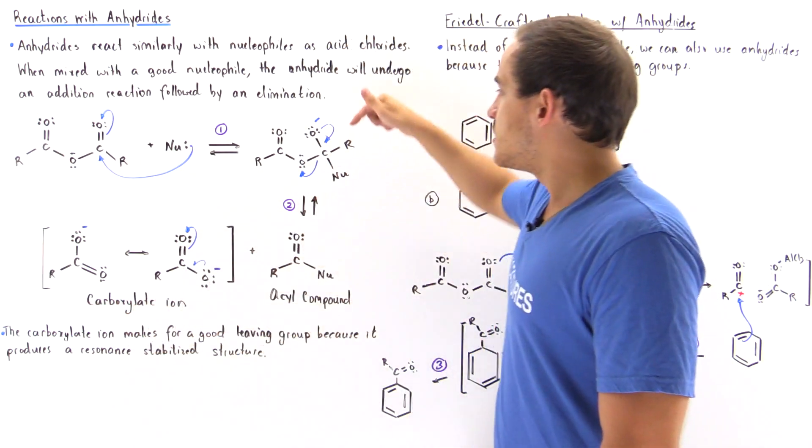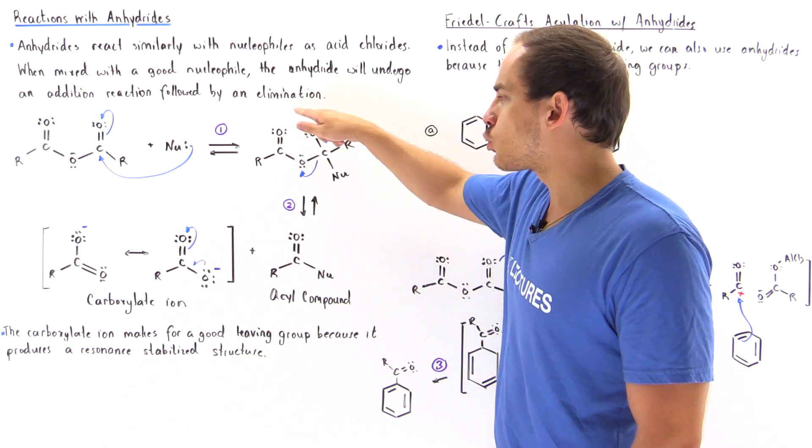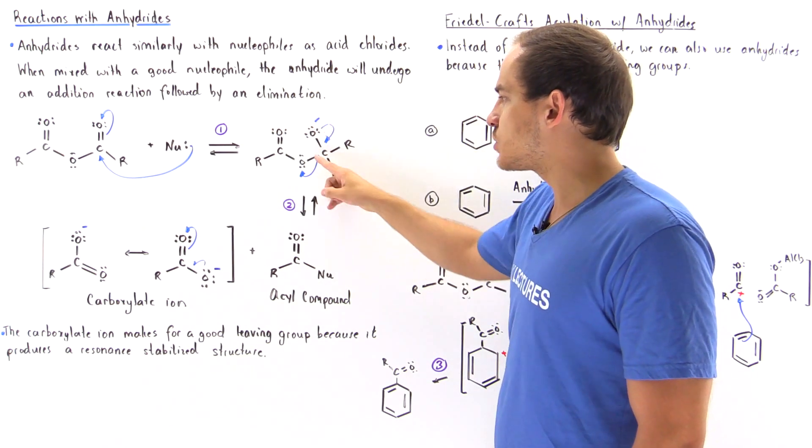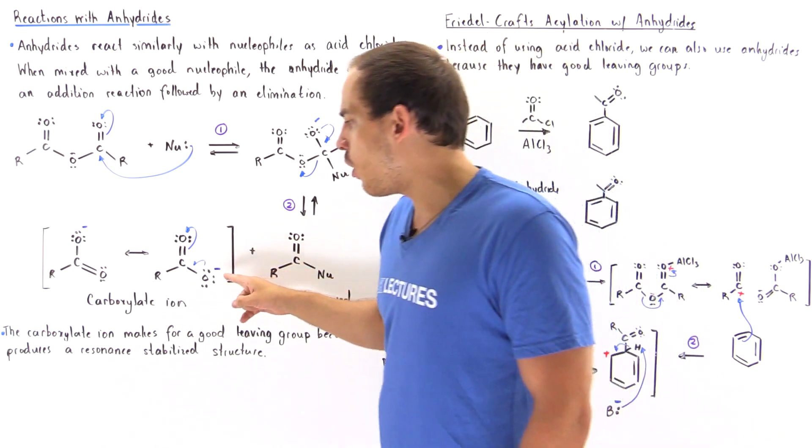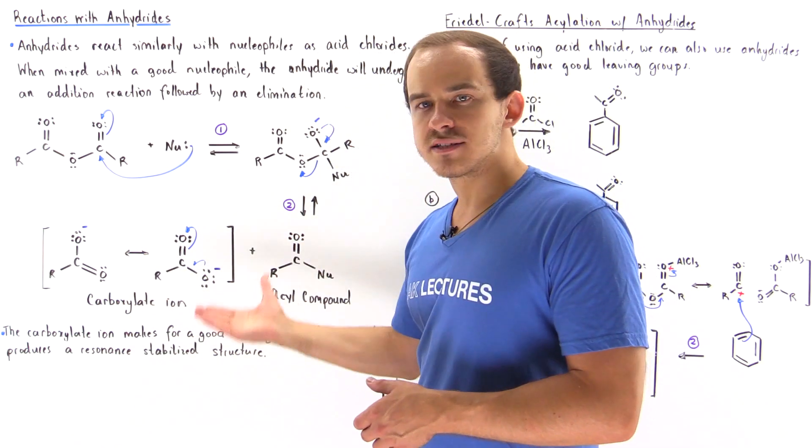in our elimination step, the pi bond is reformed and this good leaving group is kicked off. So this bond breaks off and we form a resonance stabilized molecule, our carboxylate ion.